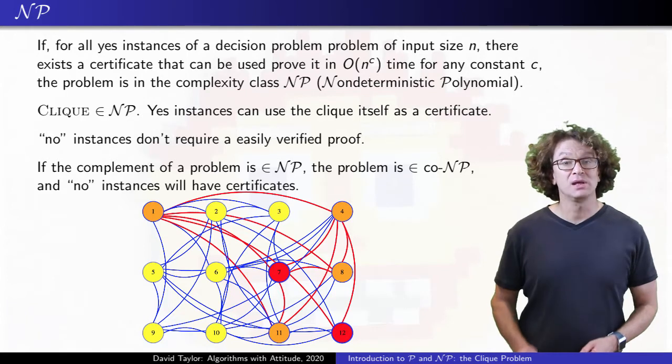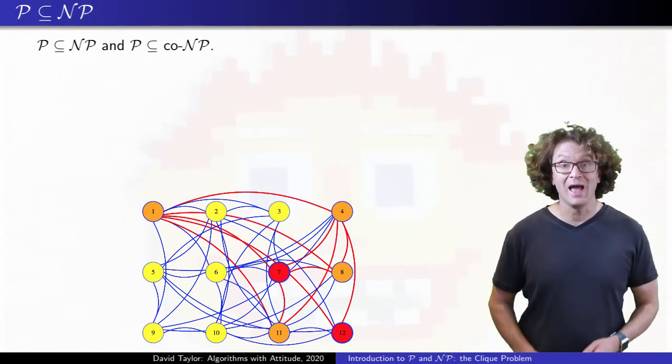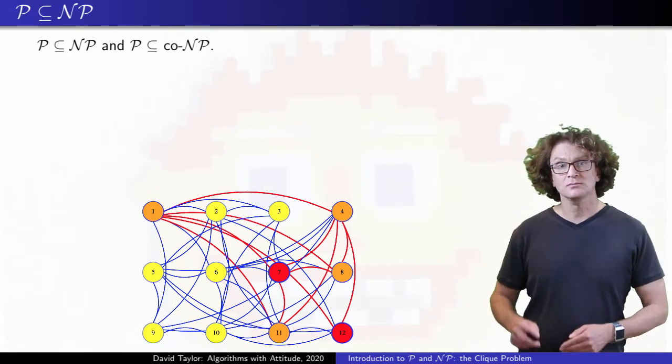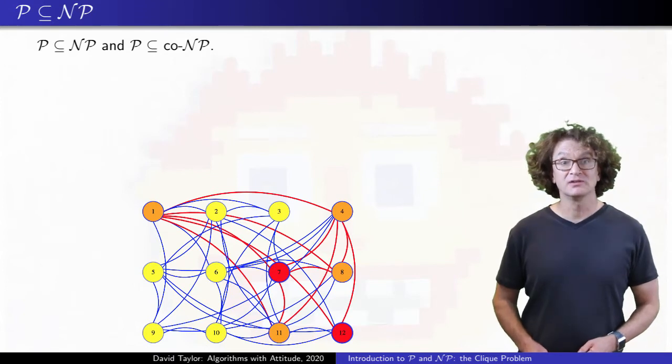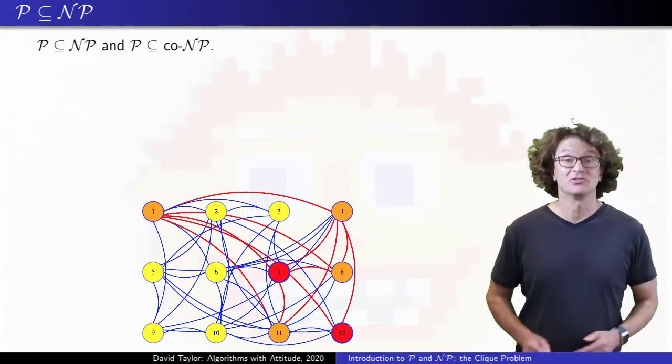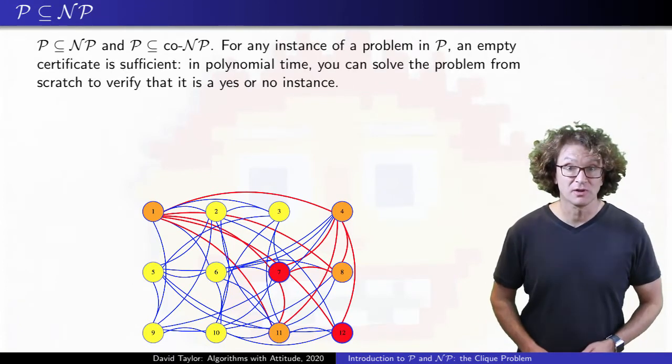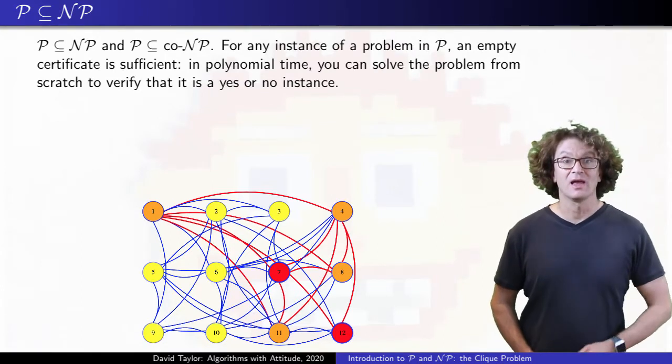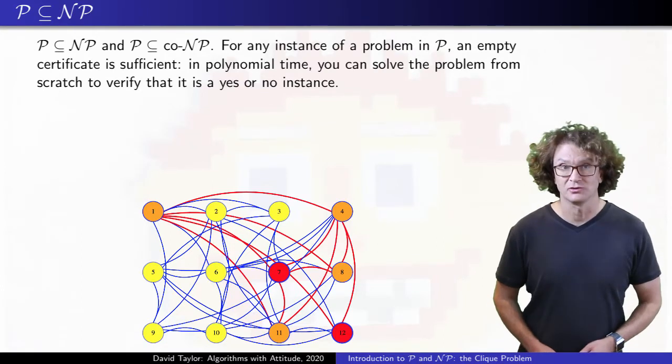So for sure, P is a subset of NP and co-NP. For problems in P, instances don't need any certificate. In polynomial time, solve any instance, and that verifies that it has a yes or no answer.